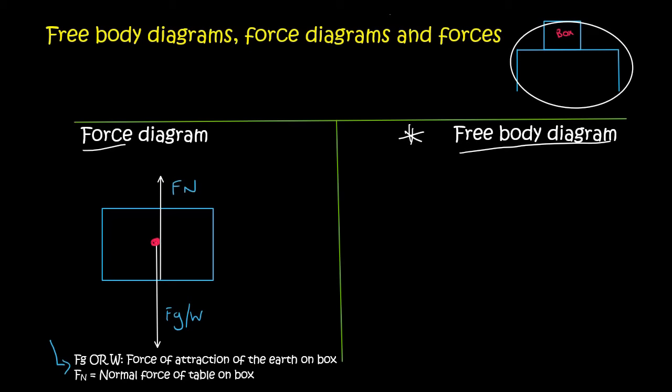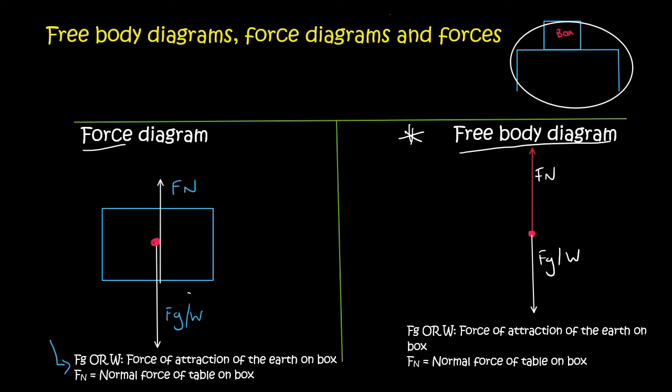Now let's do the free body diagram. So with a free body diagram, you literally just draw a dot. And then all arrows will point away from the dot. And so notice that for both of these, I forgot to mention, I said FG. And then I also added W. You only have to choose one of those.